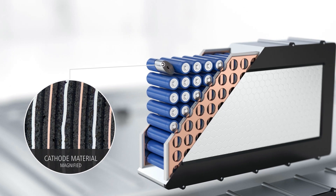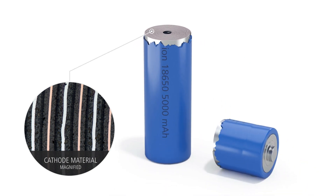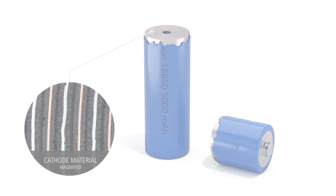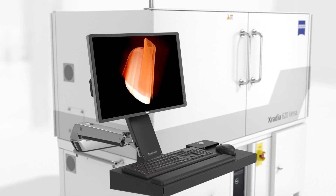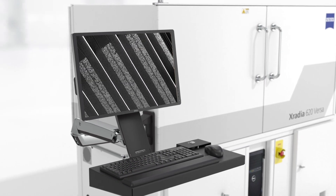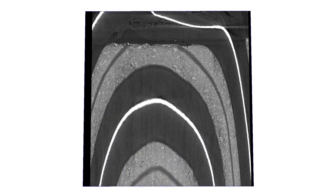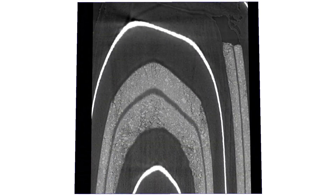Conventional sample sectioning exposes material structure, but the object of observation is irretrievably destroyed. SICE X-ray microscopy enables the investigation of the smallest details within the intact battery. X-ray microscopy allows you to go from overview scan down to the microstructure of the cathode material. Thanks to resolution at a distance, it's even possible to look at the battery inside a fully functioning cell phone again and again over hundreds of charging cycles.